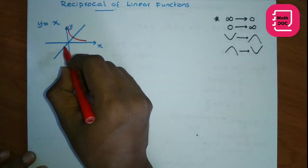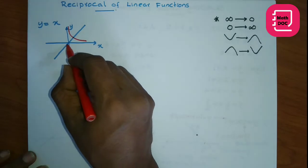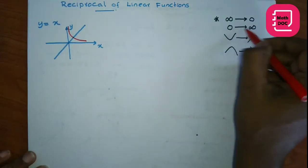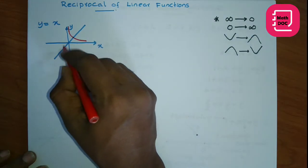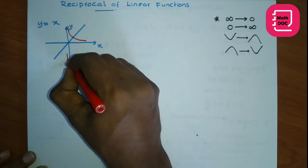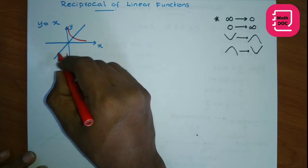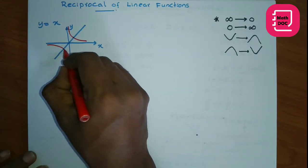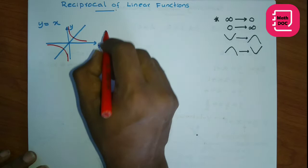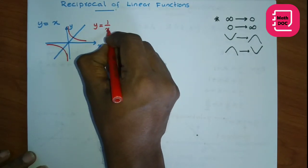Then for this portion all are negative. Here 0 goes to infinity, negative portion, so we start from minus infinity. And here infinity goes to 0. The resulting function is y equals 1 over x.